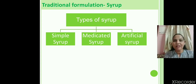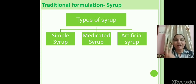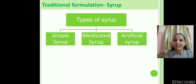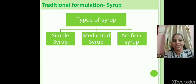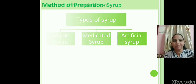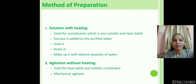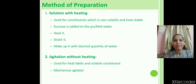Syrup is mainly used as a sweetening agent, as a preservative, as a flavoring agent, or used as a bulk. There are three types of syrup. First is simple syrup — sucrose dissolved in hot water, mainly used as a vehicle. Second is medicated syrup, mainly used for therapeutic purposes. Third is flavored syrup.